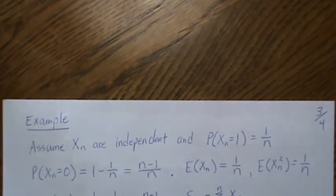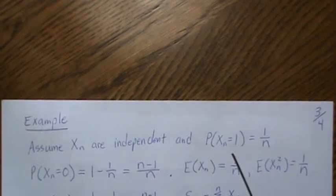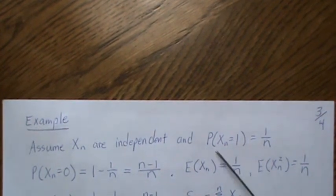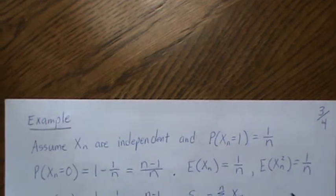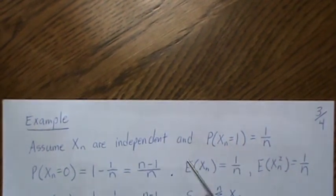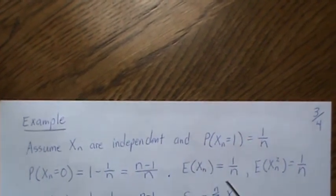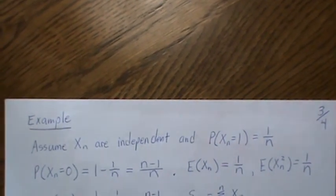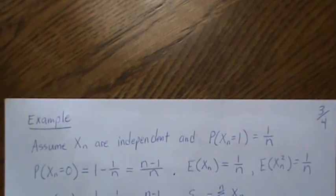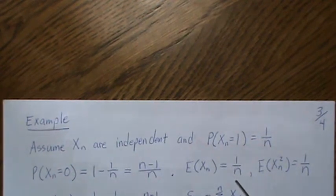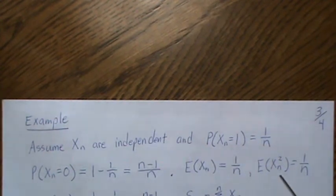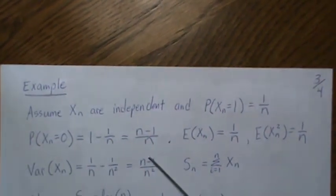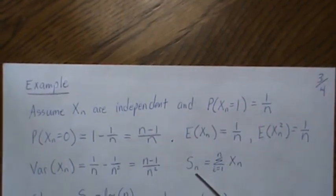Now for an example I find fascinating. Let X_n be independent, taking value 1 with probability 1/n and value 0 with probability 1 - 1/n. These are not identically distributed but they are independent and bounded by 1. The expected value is 1/n, and since it's a zero-one random variable E[X_n^2] equals E[X_n], so the variance is also 1/n minus 1/n squared.